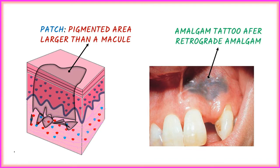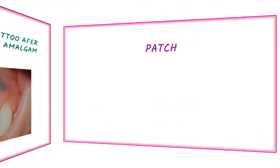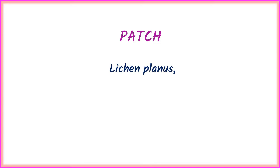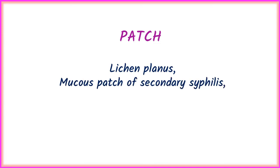In the figure, the black shaded area represents a patch — it is a pigmented area larger than a macule. In the next figure, an amalgam tattoo after retrograde amalgam filling is shown as an example of patch. Oral conditions representing patch include lichen planus, mucous patch of secondary syphilis, and snuff dipper's patch.